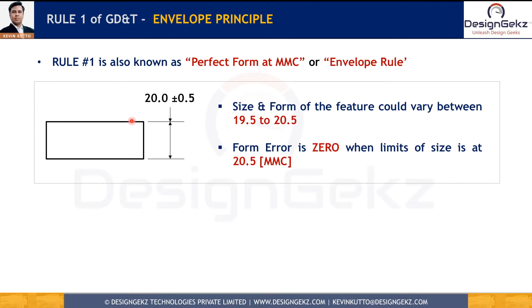Maximum material condition is the condition of a feature of size where it will have maximum material on it. For an external feature of size, the highest size will have maximum material, so this part has maximum material when produced at 20.5 — that's why 20.5 is the MMC. When this part is produced at MMC, zero form error is allowed, meaning we need perfect form at MMC. But as the local size deviates from MMC, an equivalent amount of form error is allowed at that cross section.